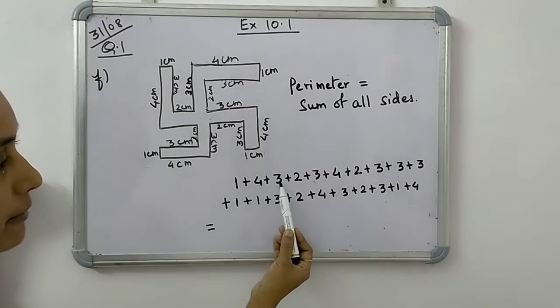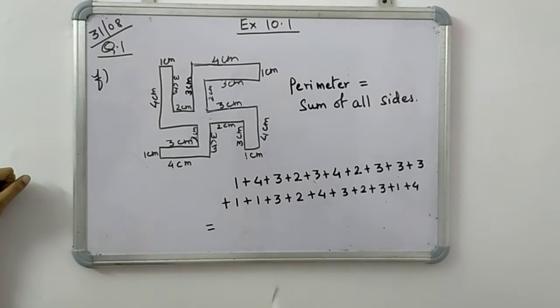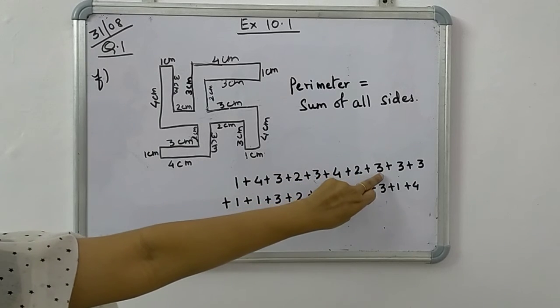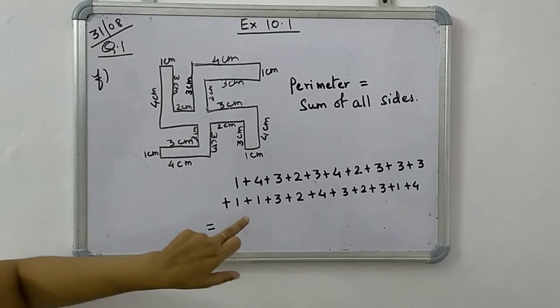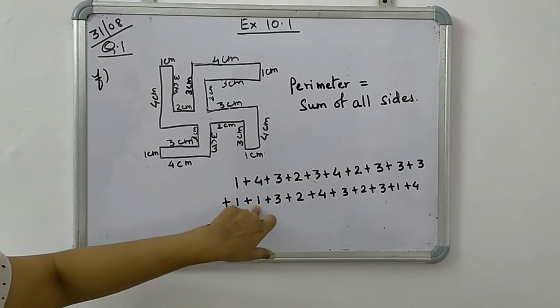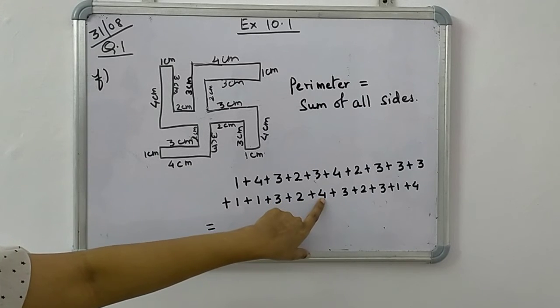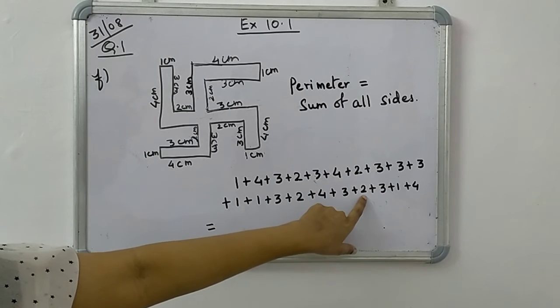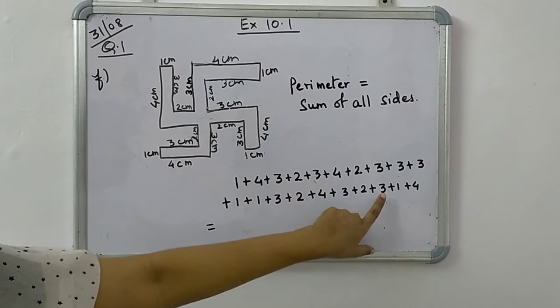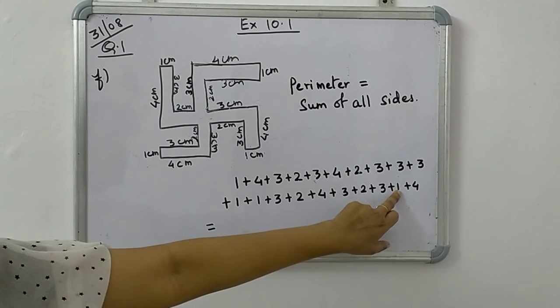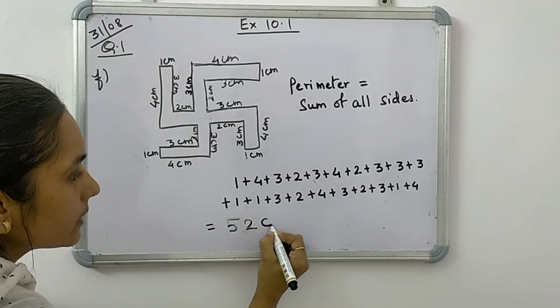So when we add 1 plus 4 is 5, 5 plus 3 is 8, 8 plus 2 is 10, 10 plus 3 is 13, 13 plus 4 is 17, 17 plus 2 is 19, 19 plus 3 is 22, 22 plus 3 is 25, 25 plus 3 is 28, 28 plus 1 is 29, 29 plus 1 is 30, 30 plus 3 is 33, 33 plus 2 is 35, 35 plus 4 is 39, 39 plus 3 is 42, 42 plus 2 is 44, 44 plus 3 is 47, 47 plus 1 is 48, and 48 plus 4 is 52 cm.